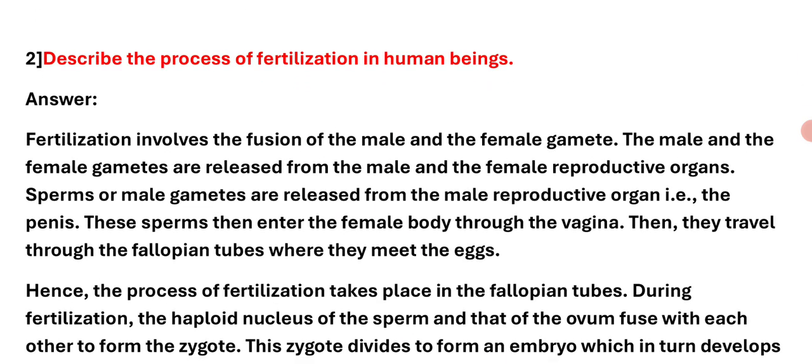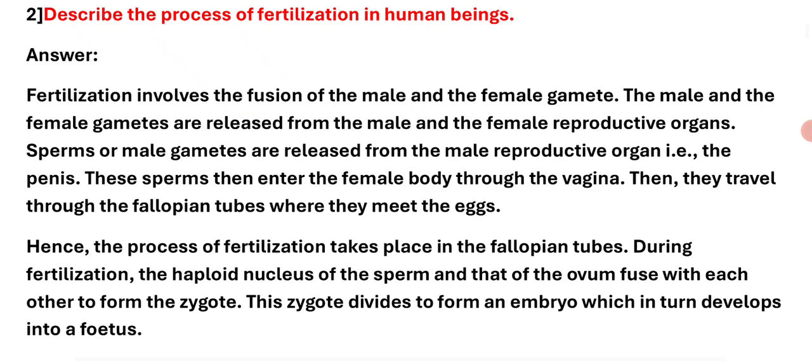Question number 2: Describe the process of fertilization in human beings. Answer: Fertilization involves the fusion of the male and female gametes. The male and female gametes are released from the male and female reproductive organs. Sperms or male gametes are released from the male reproductive organ, that is the penis.